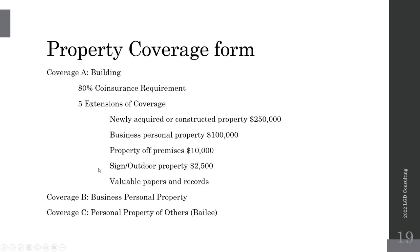If your sign is worth more than $2,500, you can raise the coverage. If the sign is not attached to the building, you'd need inland marine coverage. Valuable papers and records have some limited coverage. The three extensions most commonly tested are: newly acquired or constructed property ($250,000), business personal property in the new building ($100,000), and property off-premises ($10,000).